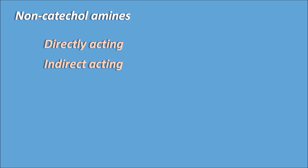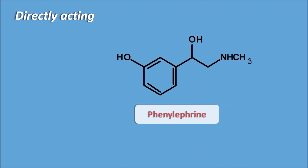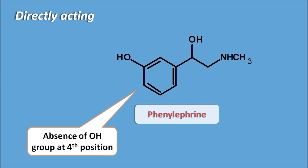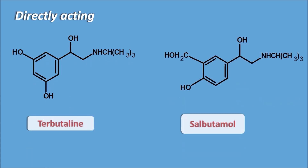Non-catecholamines can act in three ways: directly acting, indirectly acting, and mixed acting. The first directly acting agent is phenylephrine. In phenylephrine, there is no OH group at the fourth position — the absence of this OH group results in alpha-1 selectivity, making phenylephrine an alpha-1 agonist.